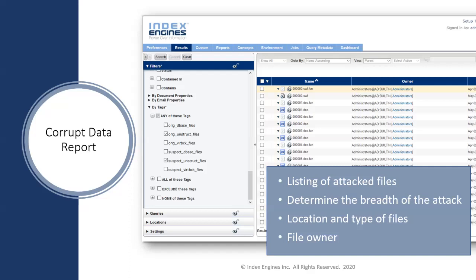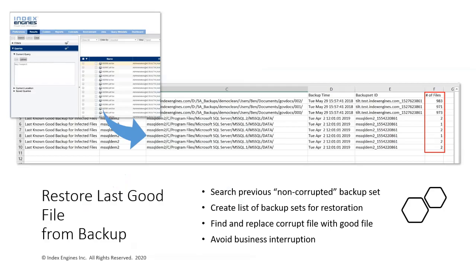A report shows the last good version and the corrupted version side by side — both auto-tagged by CyberSense so you can easily view and find them. You can also run a report asking CyberSense to show the last good version of all files, as seen on the upper left.